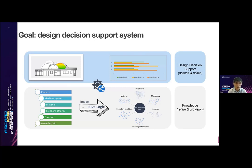In order to achieve that, we formalize the explicit knowledge of additive manufacturing in the forms of ontologies and rules, such that architects and engineers are informed of the capabilities and limitations of AM methods, and timely design adaptations are enabled. The decisions of appropriate AM methods are then supported by multi-criteria decision-making methods.